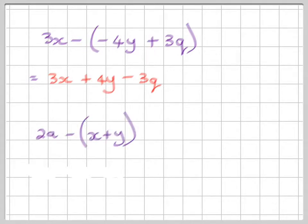One more. 2a minus and then in the parentheses x plus y. So that's going to become 2a minus x because there's a silent plus here. Those two together become a minus. And then minus y. Once again, a plus and a minus becomes a minus.